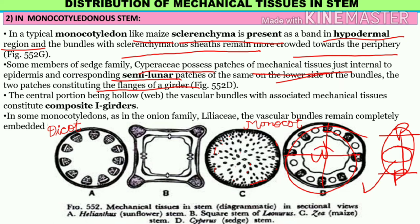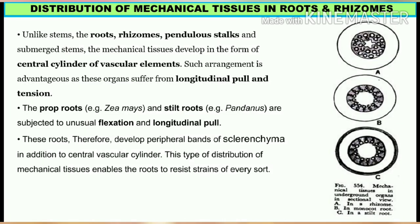In monocotyledons, as in the onion family (Liliaceae), the vascular bundles remain completely embedded in the whole hypodermal region, forming the mechanical tissue distribution characteristic of that family.